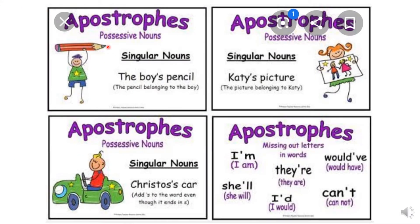Now I am going to tell you how contractions work. Firstly, contractions work as possessive nouns. We use contraction with possessive nouns — singular nouns. The boy's pencil means this pencil belongs to this boy. This pencil is the possession of this boy. Pencil belonging to boy means the boy's pencil. Or, we can also write it as the pencil of the boy — this is the short form of that sentence. Second, again, we are taking a singular noun example — again, a possessive noun. Christos' car. We add an S to the word even though it ends in S. This car is of Christos, so we are writing it as Christos' car.